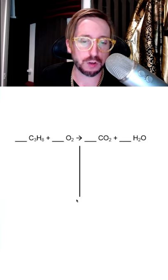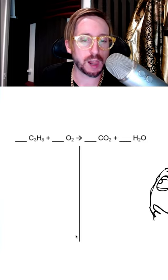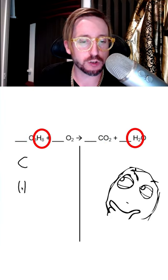Here's how to balance a chemical equation. So the first thing I'm going to do to balance this equation is look at what the individual elements are. We can see that we have carbon, hydrogen, and oxygen.